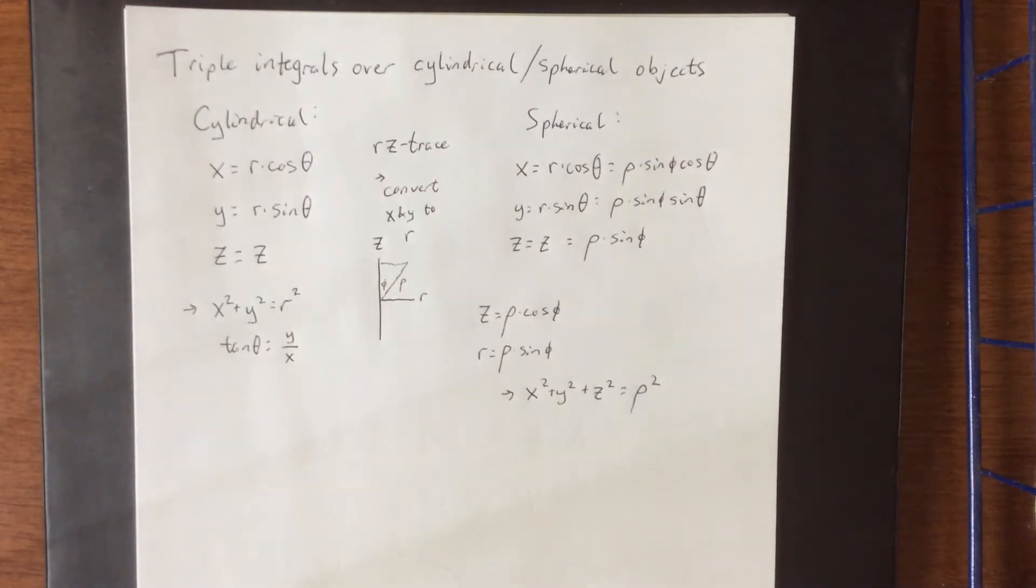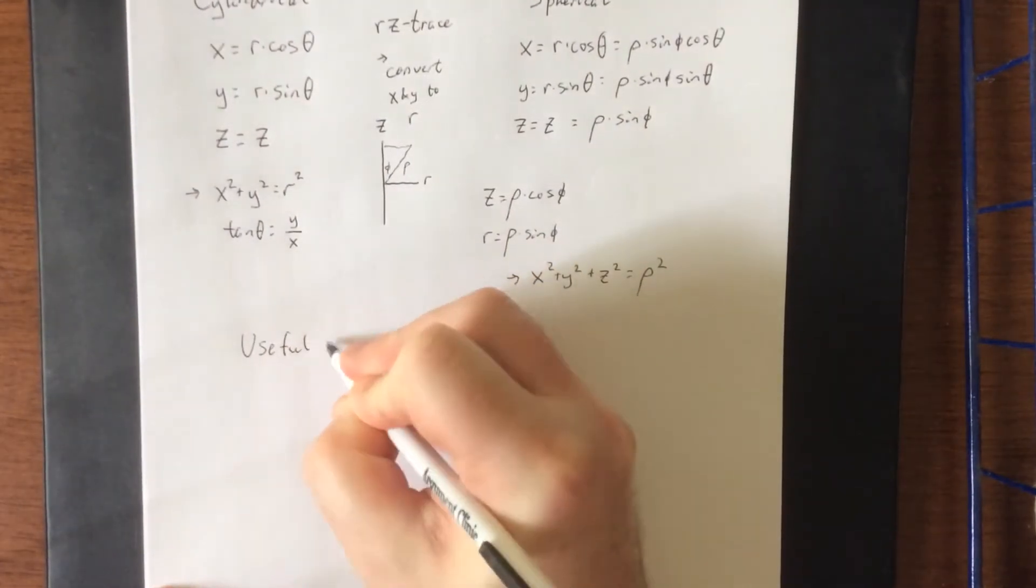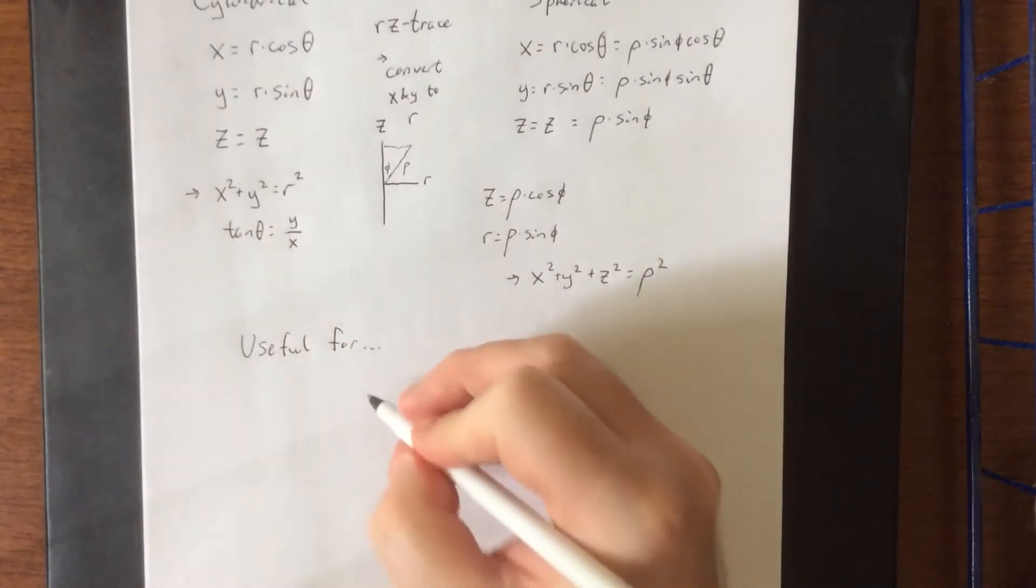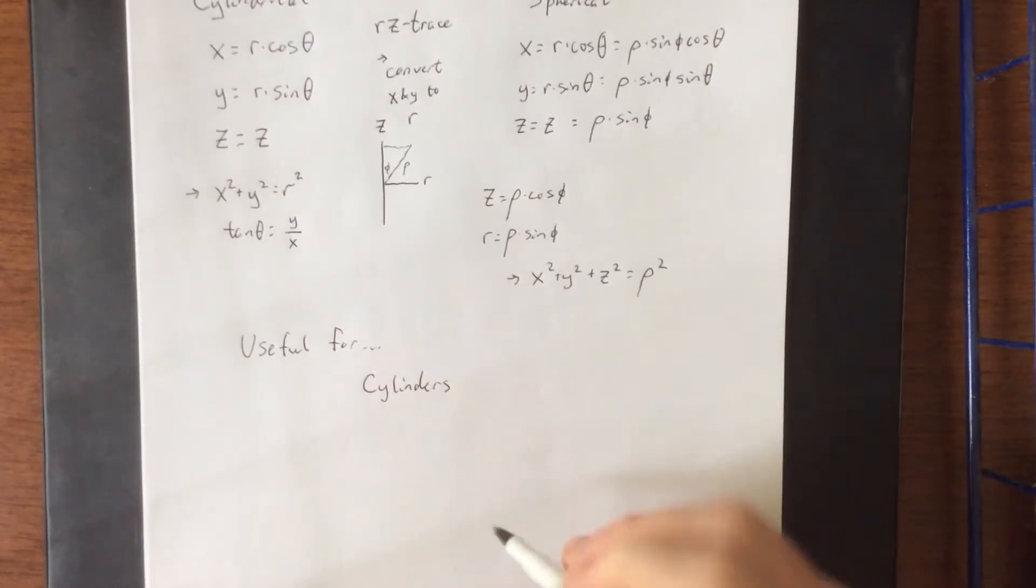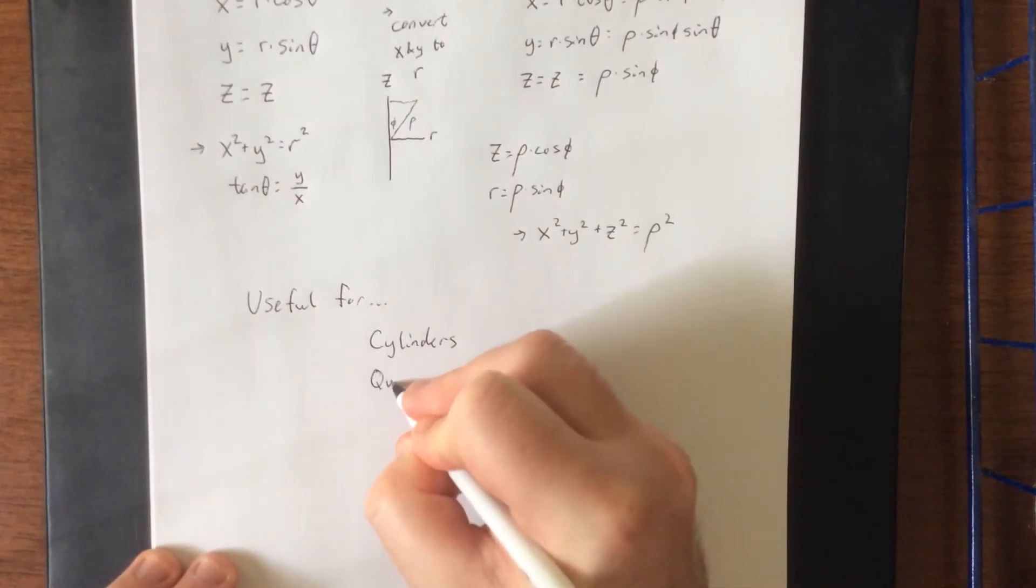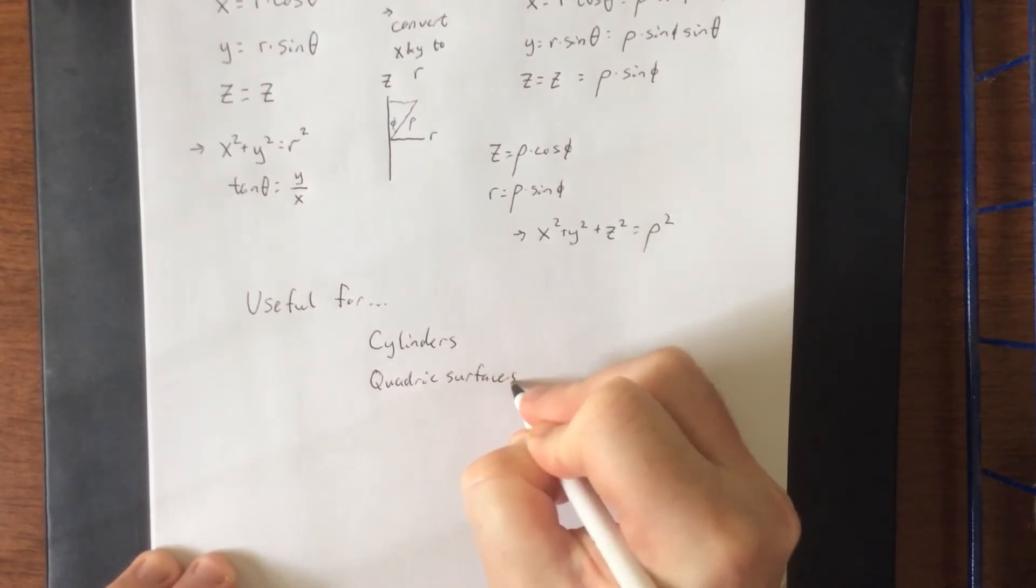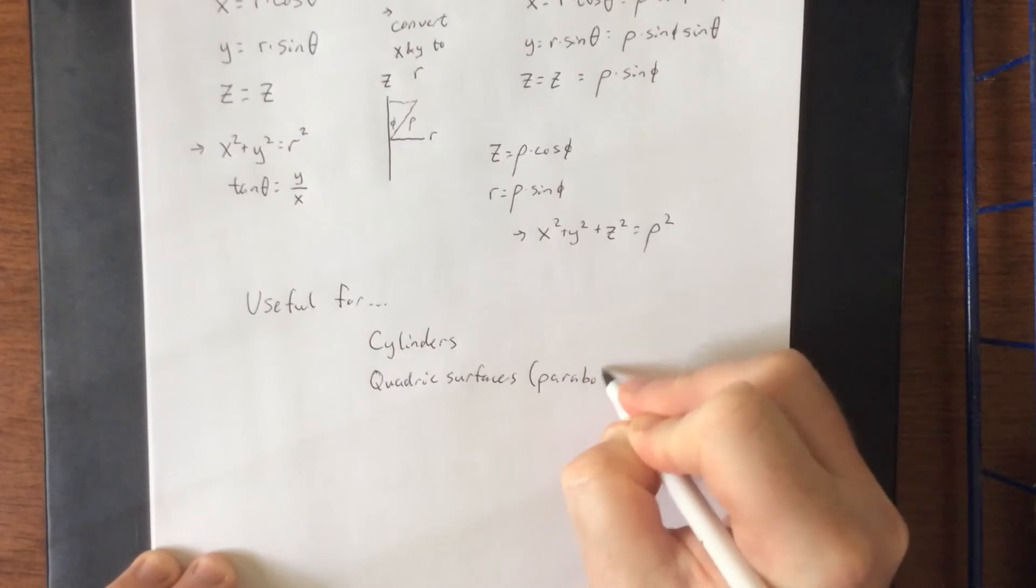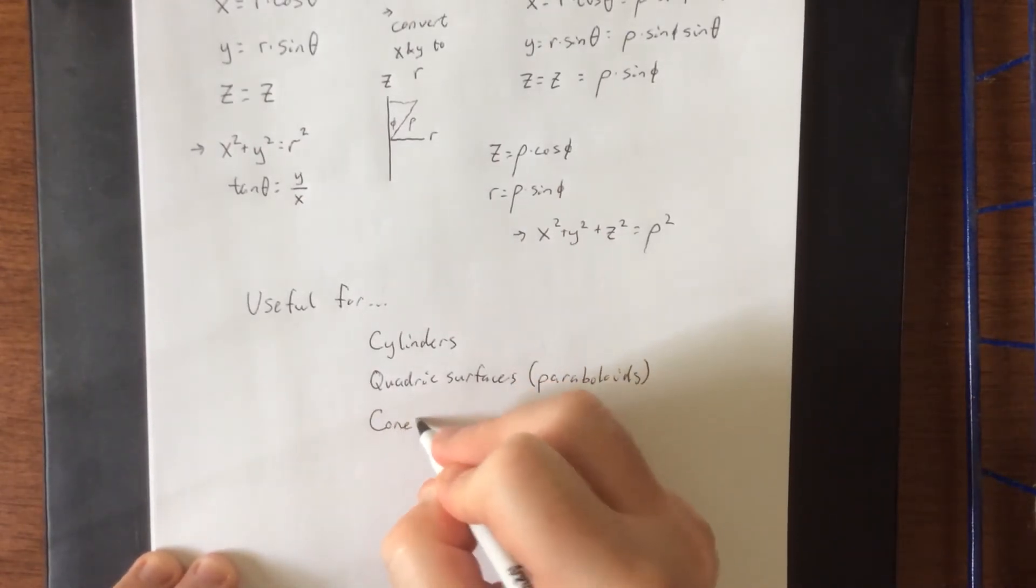Now let's talk about the situations where you would want to consider a conversion into either cylindrical or spherical coordinates. I would say one big one would be when you are dealing with cylinders, specifically right circular cylinders. When you're dealing with quadric surfaces, the one that tends to come up most frequently are the paraboloids. Cones tend to show up pretty frequently as well, as well as spheres.